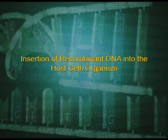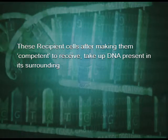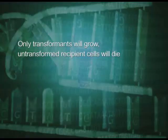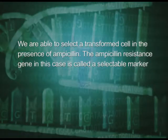The next process is the insertion of recombinant DNA into the host cells or organisms. There are several methods of introducing the ligated DNA into recipient cells. These recipient cells are made competent to receive and take up DNA present in their surroundings. If a recombinant DNA bearing a gene for resistance to an antibiotic, for example ampicillin, is transferred into Escherichia coli, the host cells become transformed into ampicillin-resistant cells. If we spread the transformed cells on agar plates containing ampicillin, only transformants will grow; untransformed recipient cells will die.